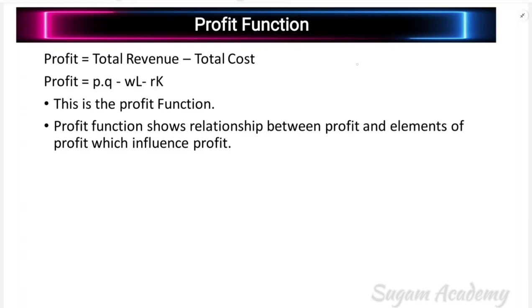The topic is profit function. Total revenue — the firm's total revenue basically depends on price and quantity. That is, total revenue depends on the price of the good and the quantity of the good produced.